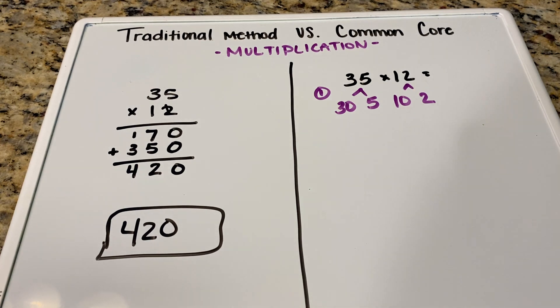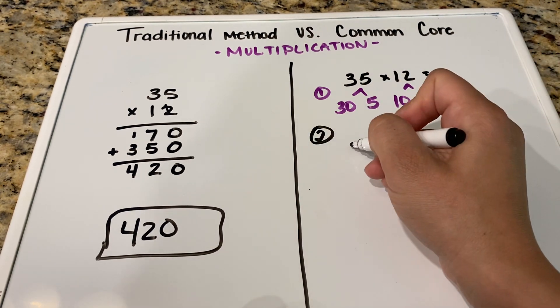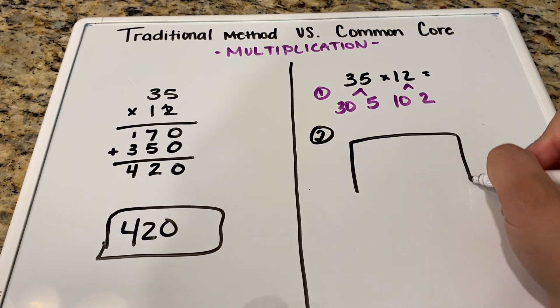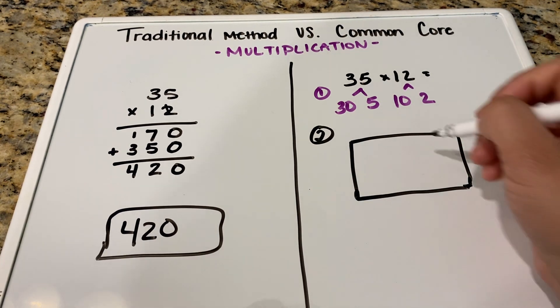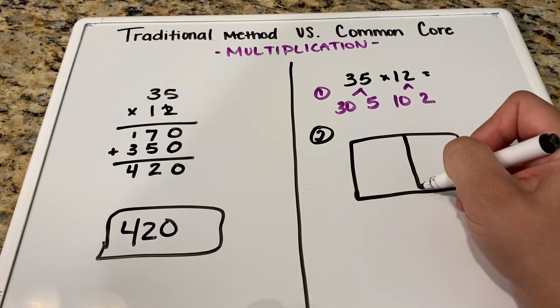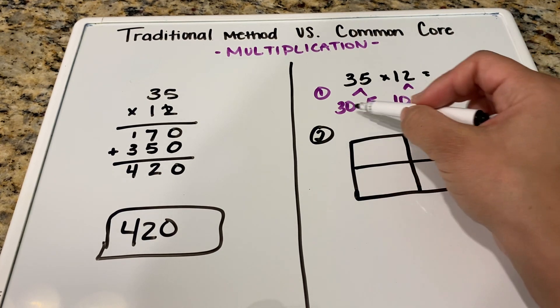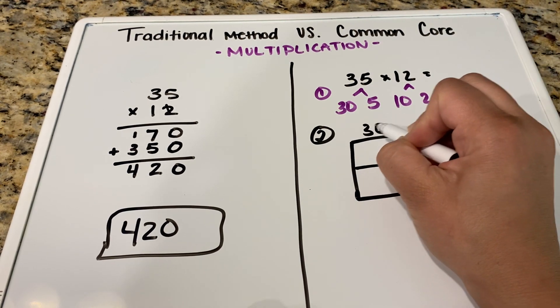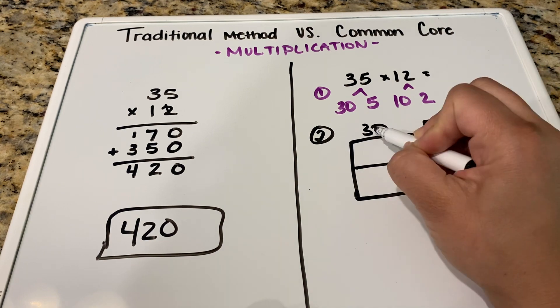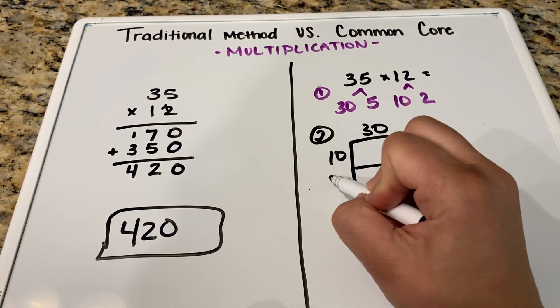Step two is we're going to go ahead and create a box. A pretty good sized box. It doesn't need to be perfect. And I like to complete our box. And then what we're going to do is we're simply going to place these down below. So we have 35. So we have our 30 and our 5, our tens and our ones. And then we have our 10 and our 2.